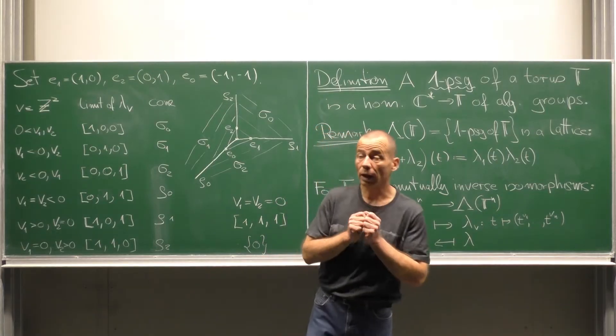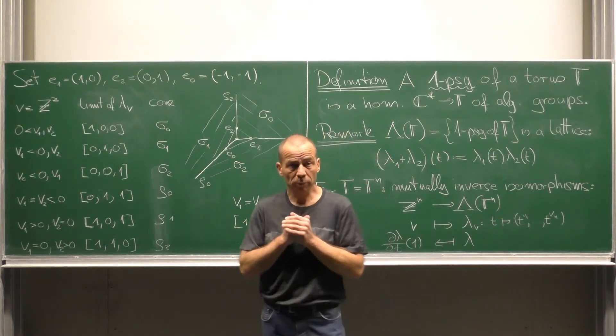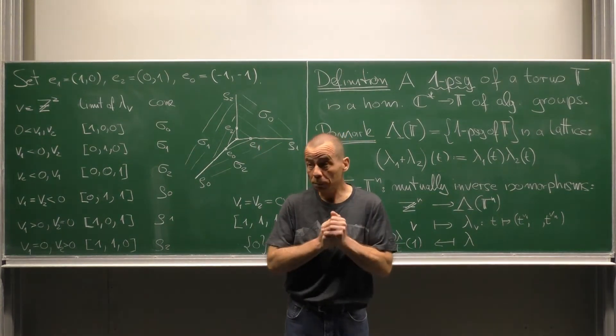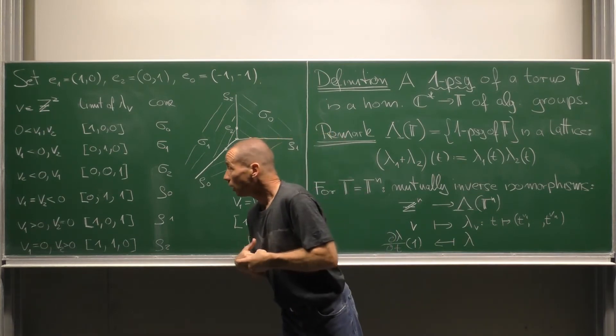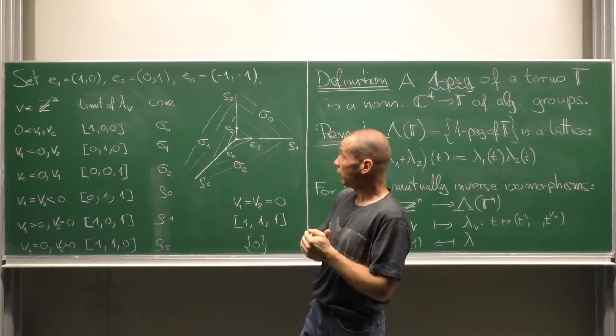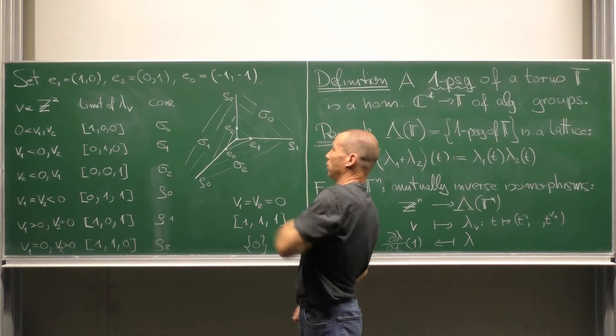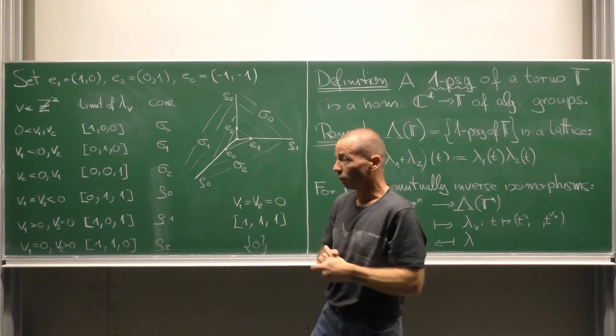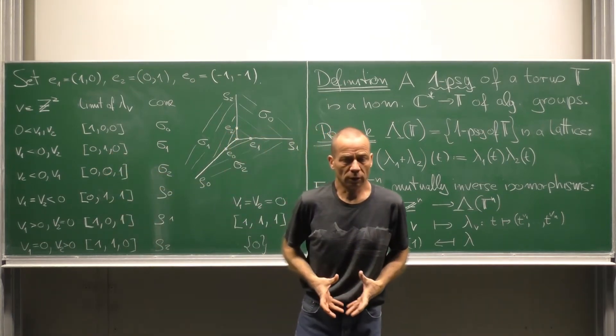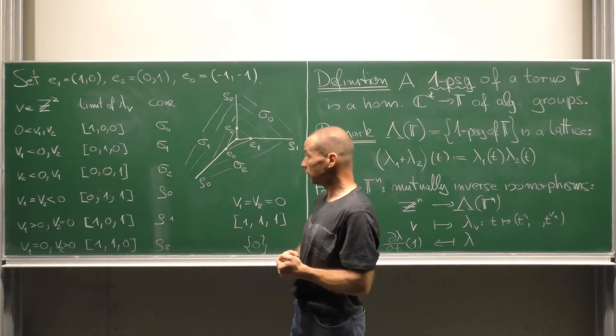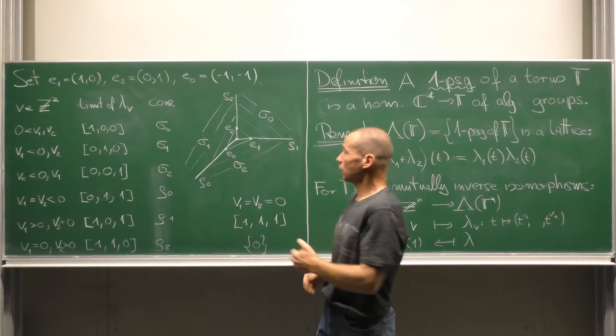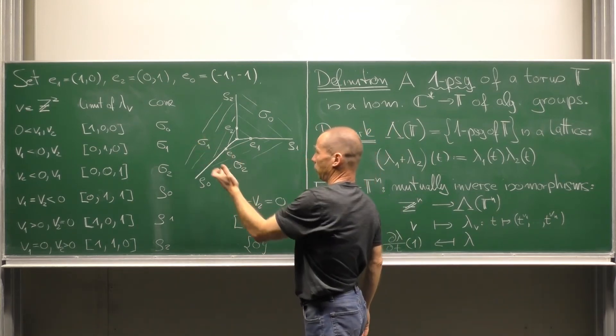Let us have a quick look at all possible limit points and their associated cones for the toric variety P2. One limit point we have already seen, 1,0,0, its associated cone is generated by the canonical basis vectors E1 and E2. There are two more limit points attracting a lot of one parameter subgroups. This is 0,1,0 and 0,0,1 and the corresponding cones are of dimension 2, sigma 1 and sigma 2.